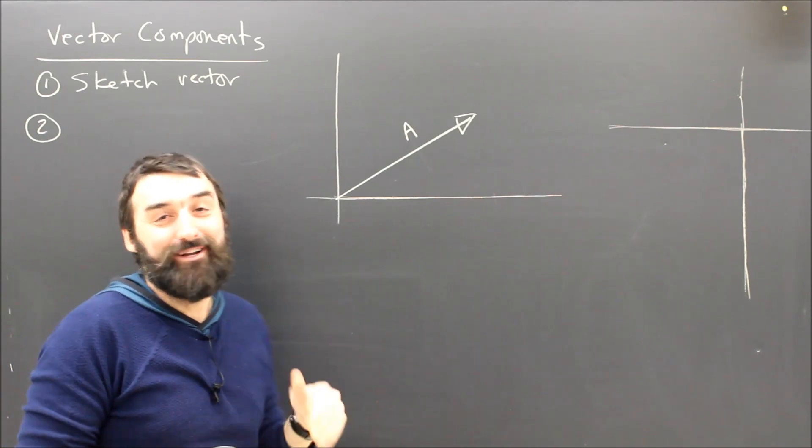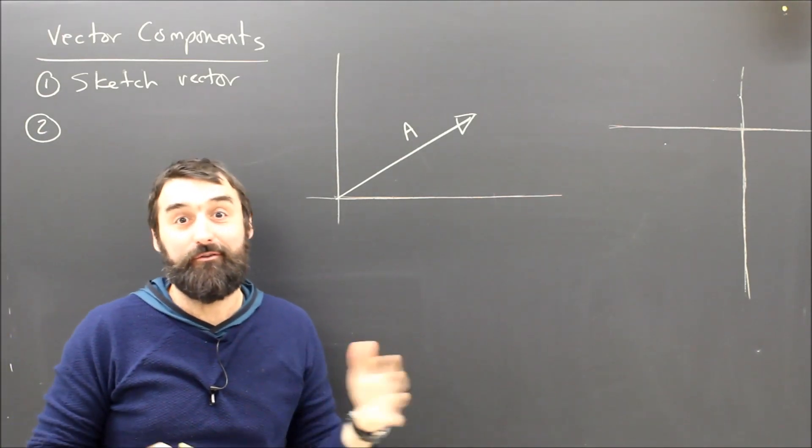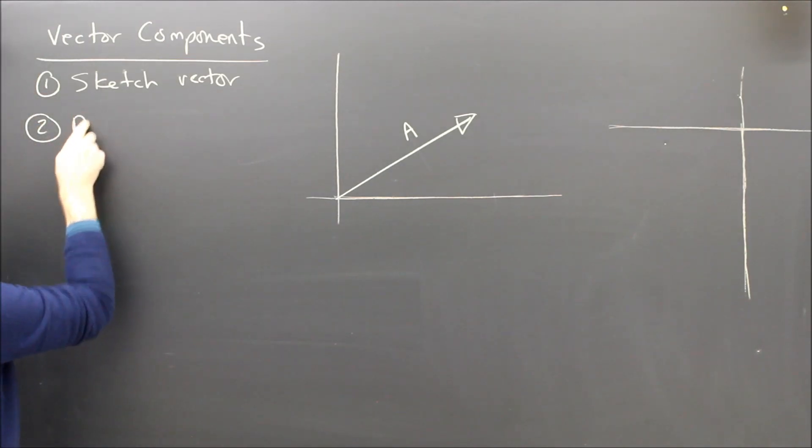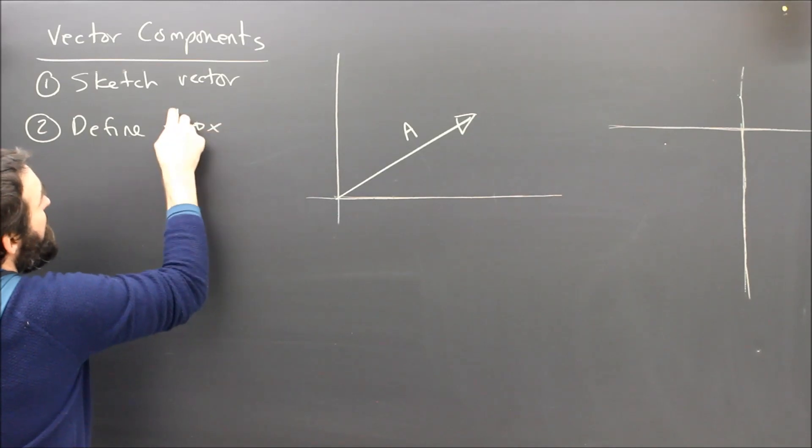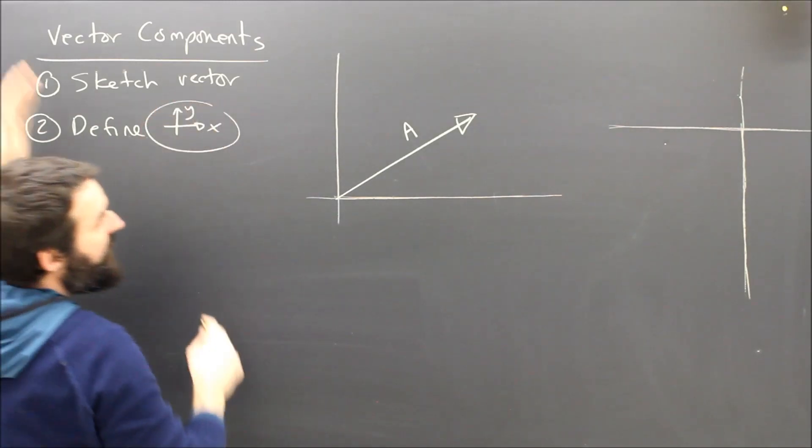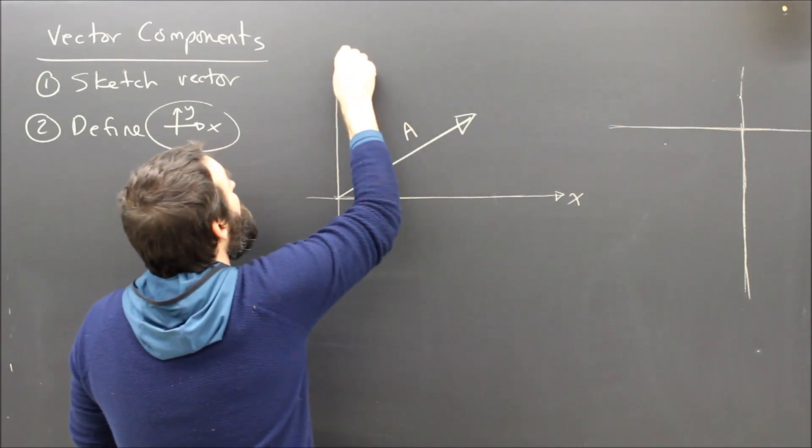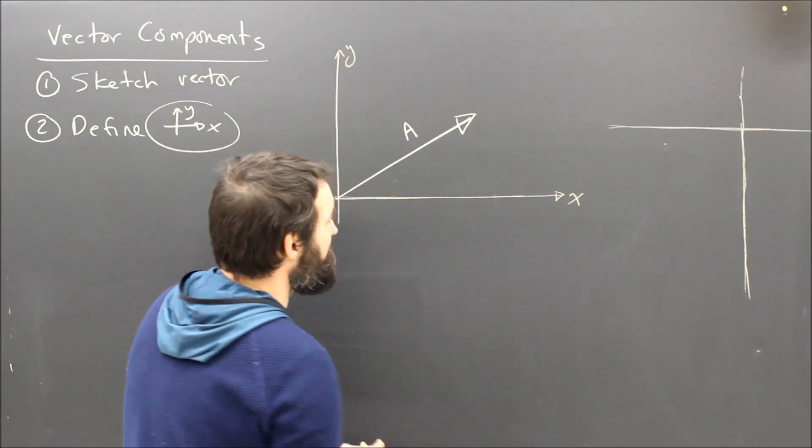I need to know whether I'm breaking it into x and y components, or north or south, or east or west components, or whatever. So the second step is to make sure I define which way is x and which way is y. So in this example, I will call x to the right, and I will call y up. So here I have a vector A.